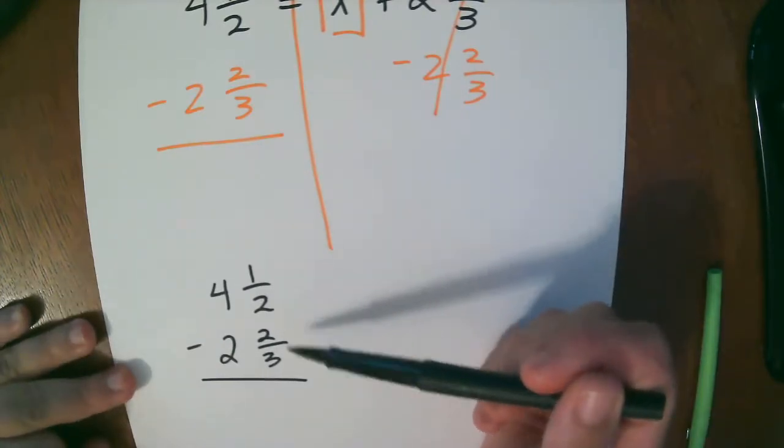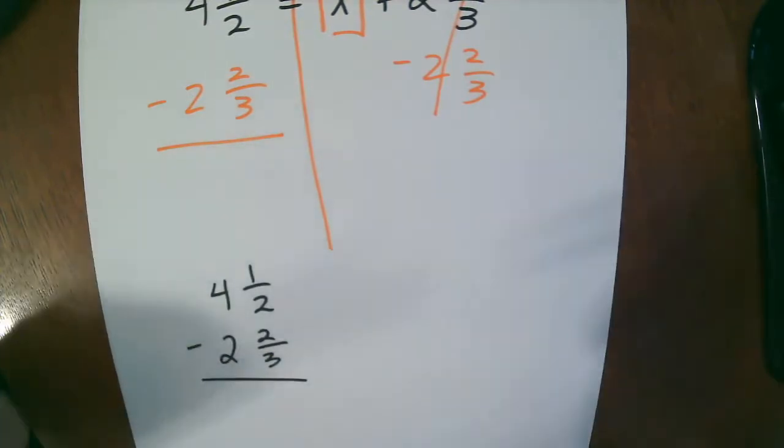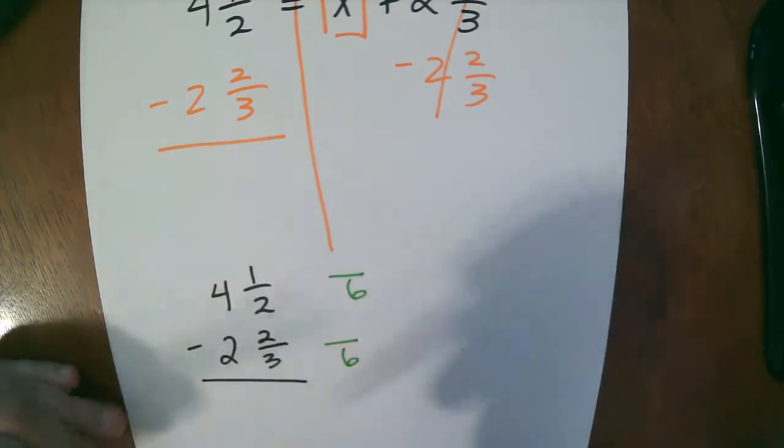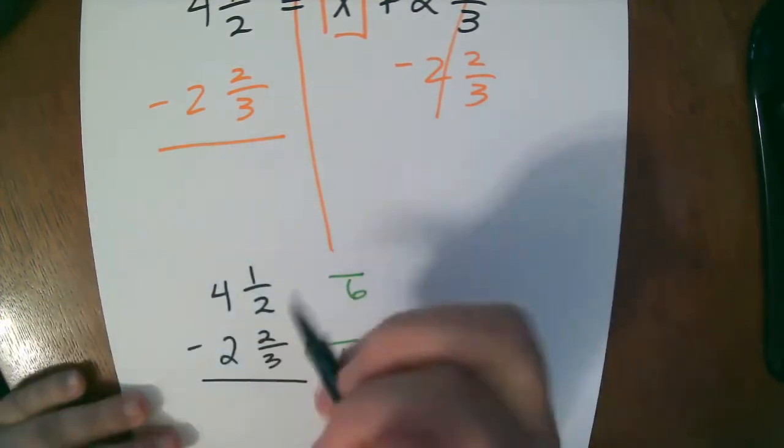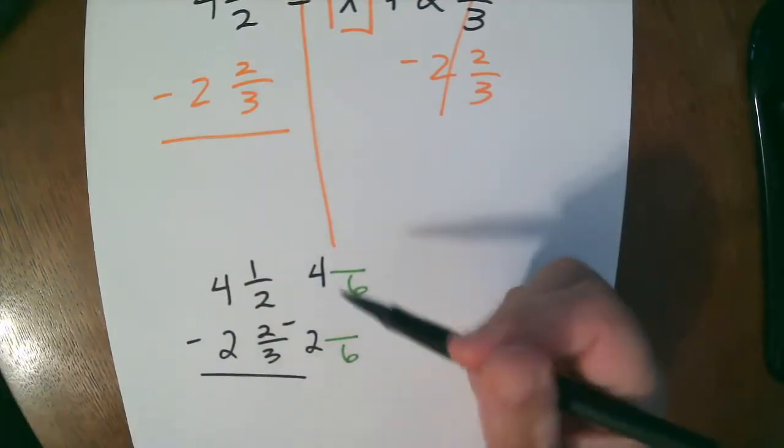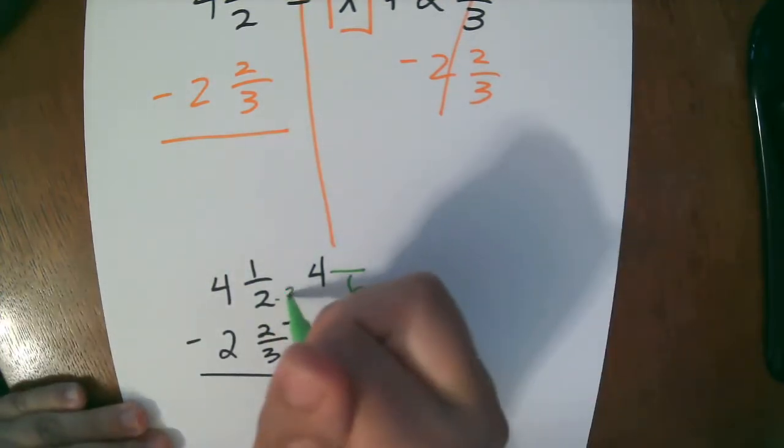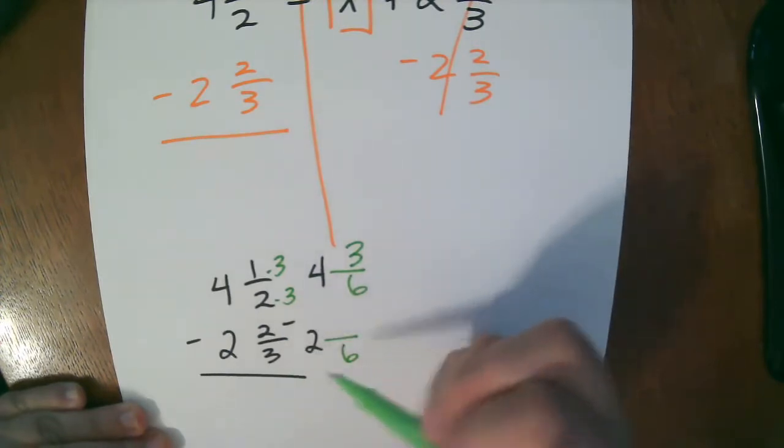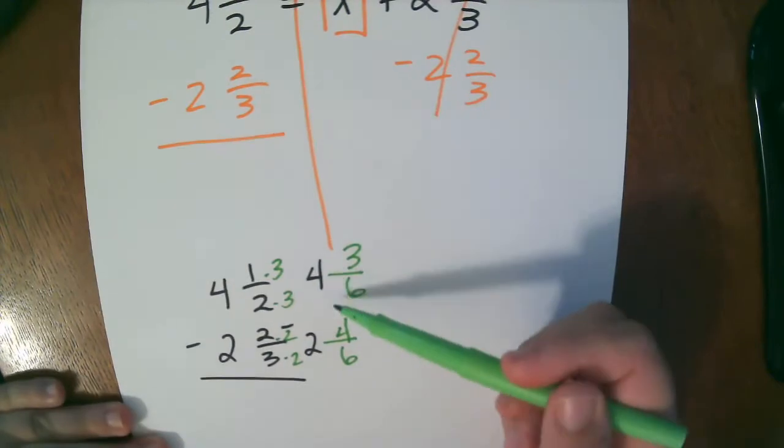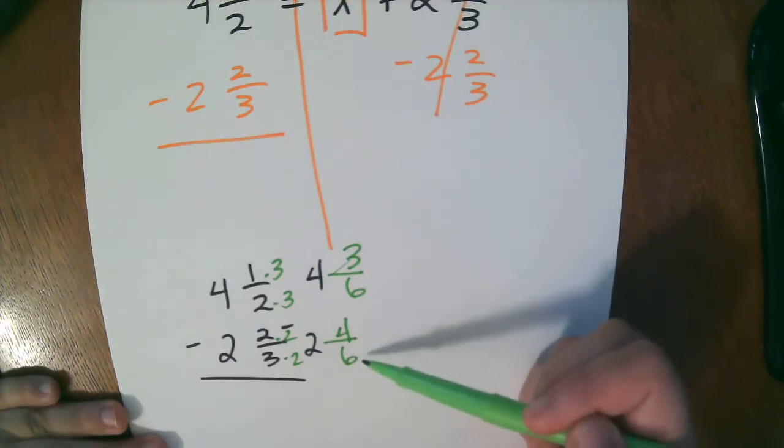So we know for subtraction from our other video, we need to find the LCM of 2 and 3. So I'm going to go ahead and go with 6. Your whole numbers stay the same. So you can just rewrite them over. They stay the same. Now let's convert. How did I get from 2 to 6? I multiplied by 3. How did I get from 3 to 6? I multiplied by 2.